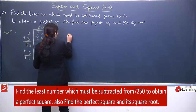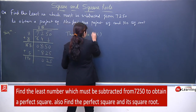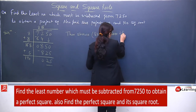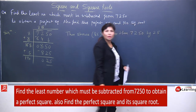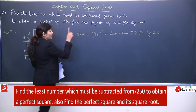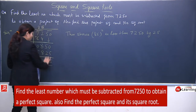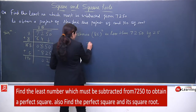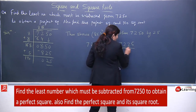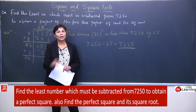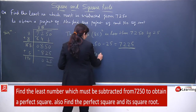This shows that 85² is less than 7250 by 25 — yeh step optional hai. 85 ka square mein 25 extra aa raha hai because it is a remainder. Toh 7250 se 25 minus karenge, so you will get 7225 — yeh aapka perfect square hai. 25 is the least number to be subtracted from 7250.